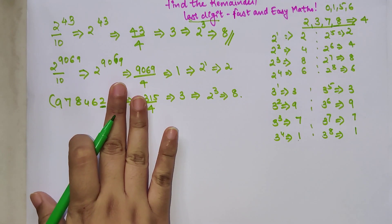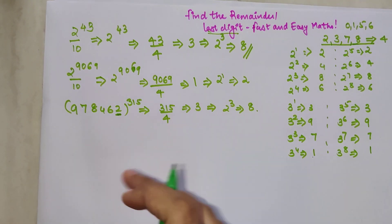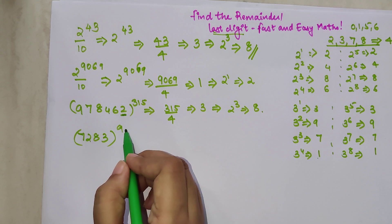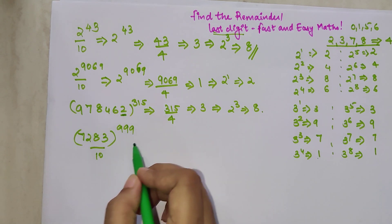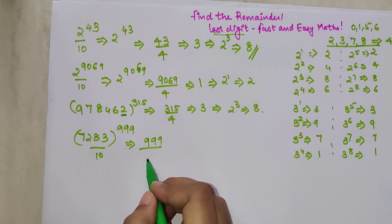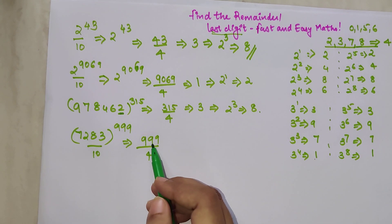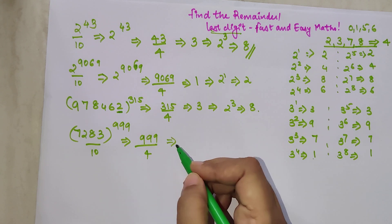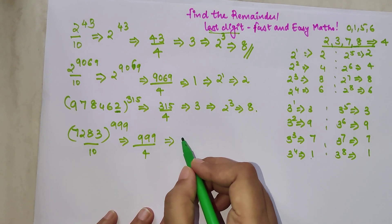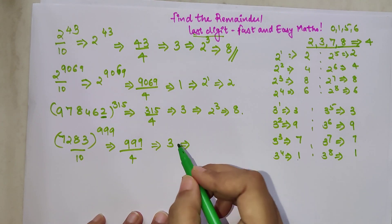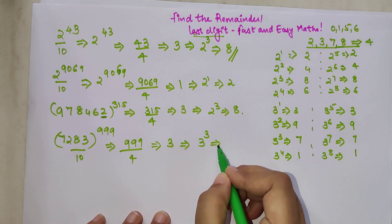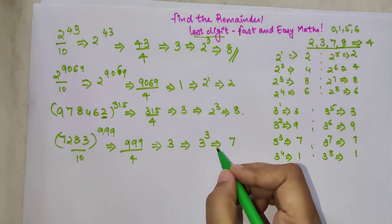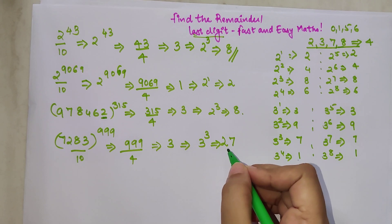Let's apply this to a big number: 7283 raised to 999, divided by 10 — find the remainder. Divide 999 by 4; using the divisibility rule we just check 99 ÷ 4, which gives remainder 3. So the final answer is 3 raised to 3 = 27. The last digit is 7, and the remainder is 27.